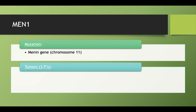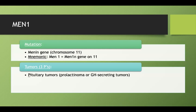Let's start with MEN1. The genetic mutation is the MEN1 gene on chromosome 11 — a good way to remember this is MEN1 equals MEN1 gene on 11, so there are a lot of ones. The three P's you have to know for MEN1 are: pituitary tumors, parathyroid adenomas, and pancreatic islet cell tumors.